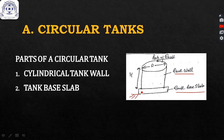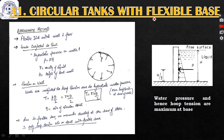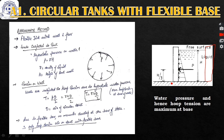If the connection of the tank wall with the base slab is flexible, the design will differ from when it is fixed. First we will take up the case of circular tanks with flexible base using the approximate method. When the joint is flexible, some movement — either rotation or displacement — is allowed at that point.